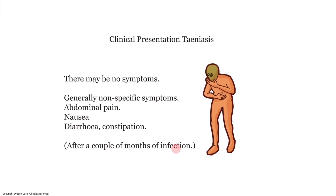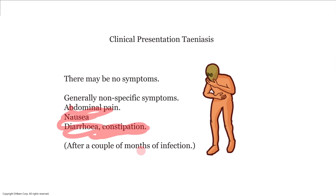Clinical presentation of taeniasis: there may be no symptoms, or non-specific symptoms such as abdominal pain, nausea, diarrhea, and constipation — appearing only after a couple of months, because it takes about ten weeks for the head and neck to grow into a mature three-to-seven-meter worm. People can have symptoms for years without knowing a tapeworm is the cause.